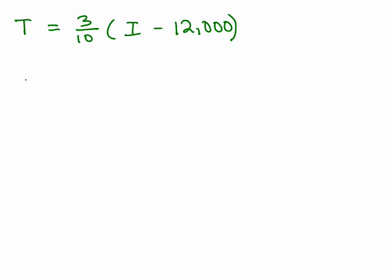Because there's usually more than one way to solve for a variable. So if I do the distributive property, I have 3 tenths I and you could write that as 3I over 10 or 3 tenths I. I think it's easier to just see it as the coefficient minus, now what do I have here? 3 tenths times 12,000.